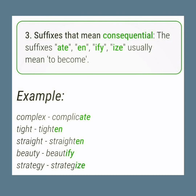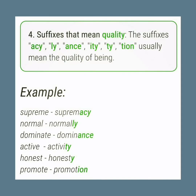Suffixes that mean 'consequential' or 'to become': the suffixes -ate, -en, -ify, -ize usually mean 'to become'. Examples: complex → complicate, tight → tighten, straight → straighten, beauty → beautify, strategy → strategize.